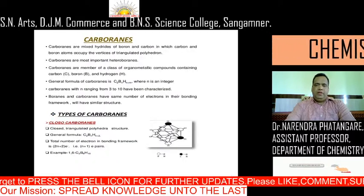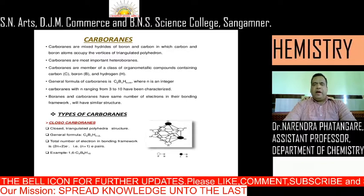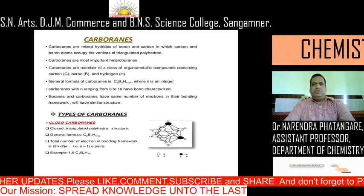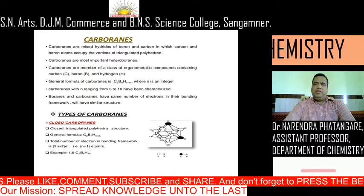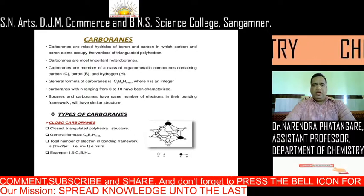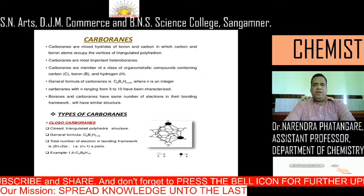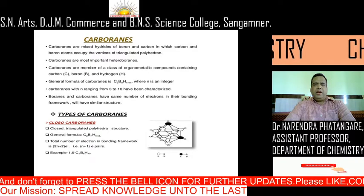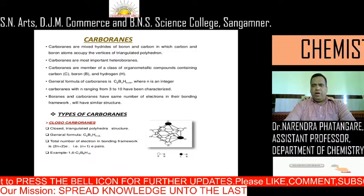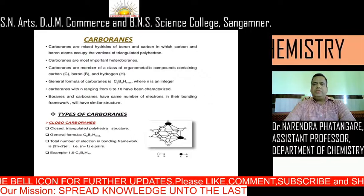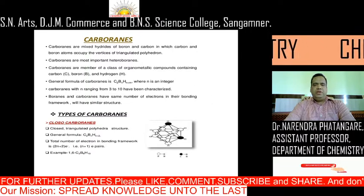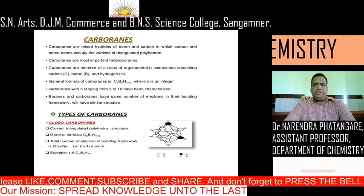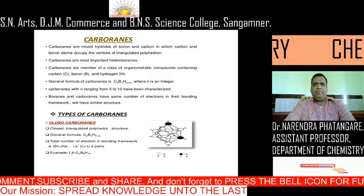The next topic is carboranes. Carboranes are the mixed hydrides of boron, carbon, and hydrogen, in which carbon and boron atoms occupy the vertices of a triangulated polyhedron. Carboranes are the most important heteroboranes. They are members of a class of organometallic-like compounds containing carbon, boron, and hydrogen. They have the general formula C2BnHn+m, where n is an integer. Carboranes with n ranging from 3 to 10 have been characterized. Boron and carboranes have the same number of electrons in their bonding framework and therefore have similar structures.